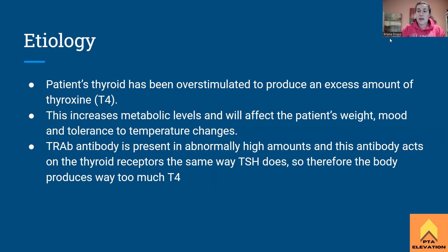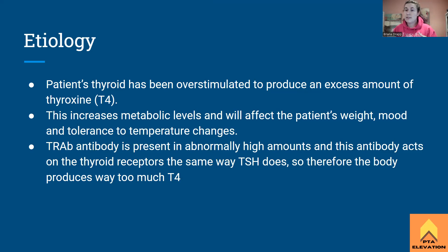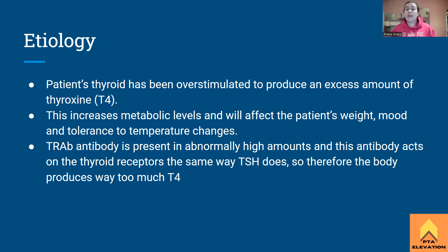The etiology of Graves' disease is essentially a patient having an overstimulated thyroid, which causes it to produce an excess amount of thyroxine. The metabolic rate is going to increase, which means that weight is going to decrease. We're metabolizing food really quickly. We're going to have decreased weight, mood changes — becoming more anxious and on edge — and heart palpitations.